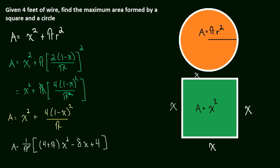So now we can take the derivative. So the derivative of the area with respect to x. Well, this 1 over pi is just a constant, so that stays where it was, 1 over pi. And then we have 2 times 4 plus pi times x minus 8. And that is the derivative.